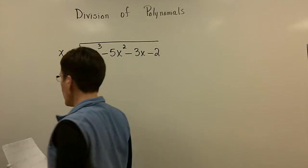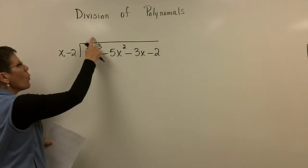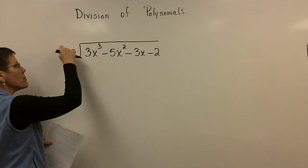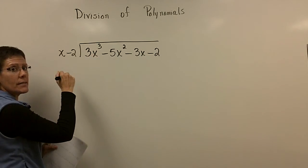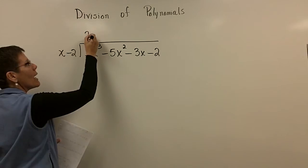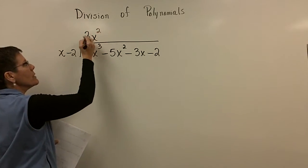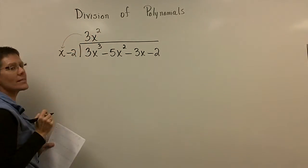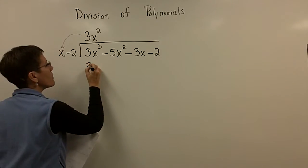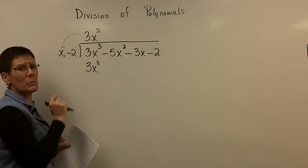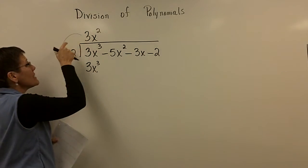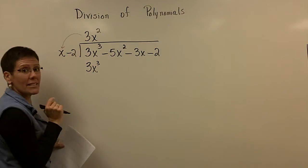So first, I'm going to ask of you, what term times x will give you 3x cubed. So I need a 3x squared times x will give me a 3x cubed. That's the hardest part for people to figure out what to put right there. That times this has got to match that exactly.